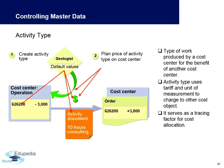Activity types represent the type of work produced by a cost center for the benefit of other cost centers. Activity types use a tariff and unit of measurement to charge other cost objects — for example, 10 hours of consulting at a defined rate.